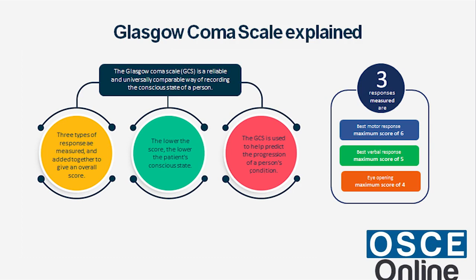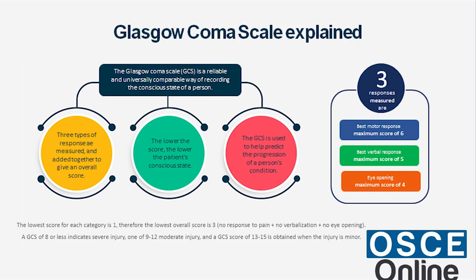The three responses measured are: Best Motor Response with a maximum score of 6, Best Verbal Response with a maximum score of 5, and Eye Opening with a maximum score of 4. The lowest score for each category is 1, so the lowest overall score is 3 — no response to pain, no verbalization, and no eye opening. A GCS of 8 or less indicates severe injury, 9 to 12 moderate injury, and 13 to 15 minor injury.